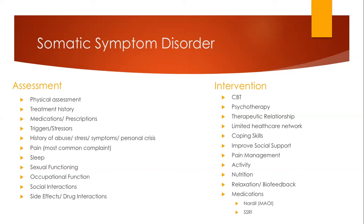Our interventions are first and foremost to shift the focus from their physical feelings to their emotional feelings so that we can help them cope with whatever trauma and psychological distress they're experiencing to reduce those physical symptoms. Generally, we want to centralize healthcare to one provider who needs to show trust and concern, and we want to use increased complementary and alternative medicines. We want to treat comorbidities conservatively using the least intrusive approaches. We can provide cognitive behavioral therapy to help refocus them on their emotional distress rather than physical symptoms.